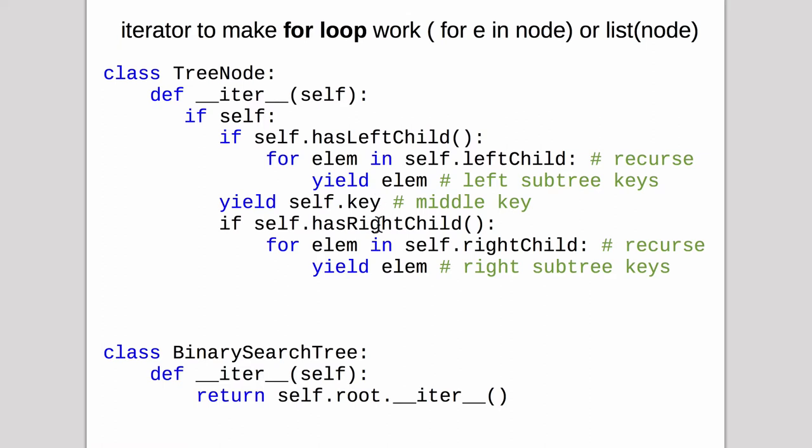And then it goes into the right subtree and loops through all the nodes in the right subtree in order. And returns the key values and it yields that.